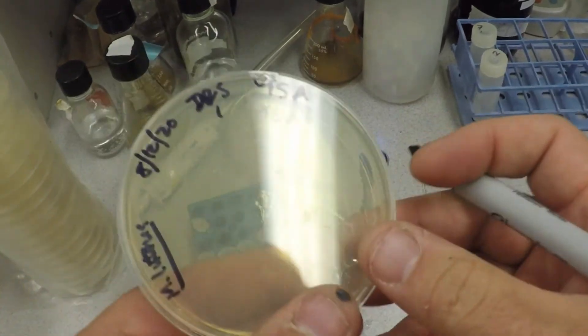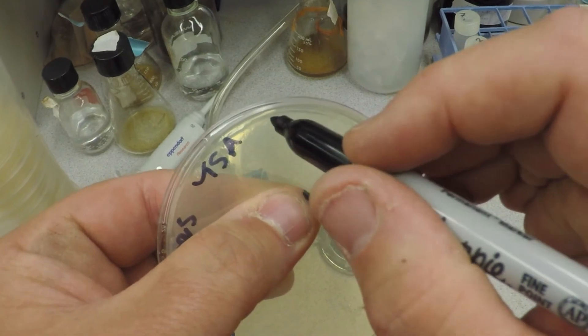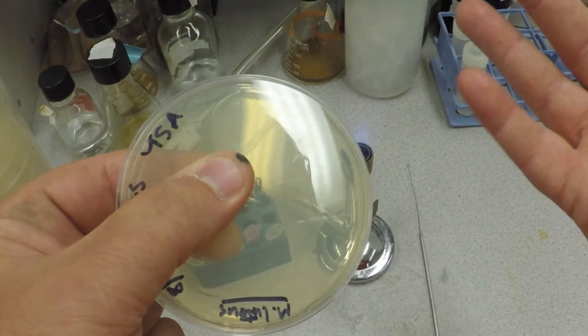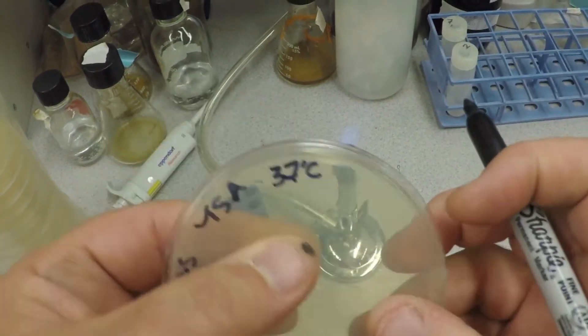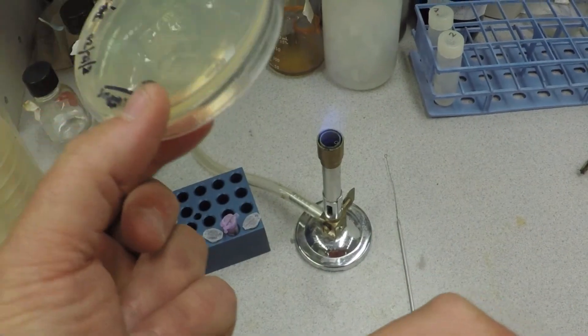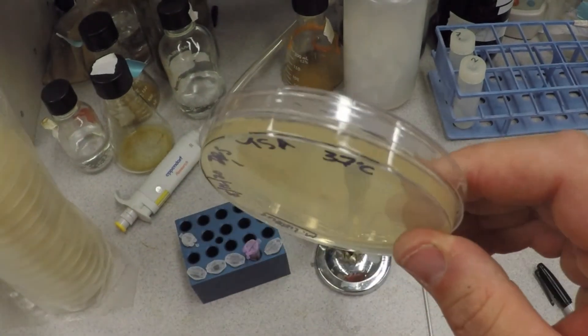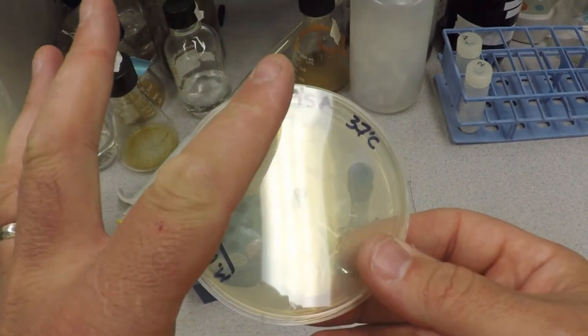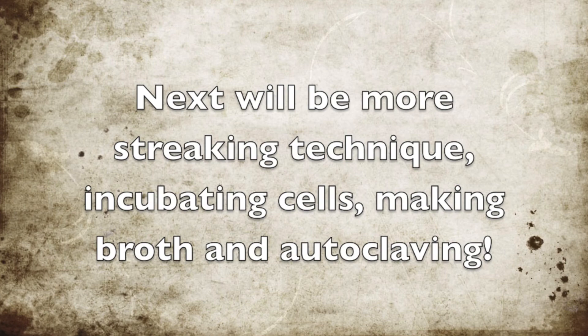We're going to incubate all of these at 37 degrees. Notice I'm also writing on the bottom, not writing on the lid. That's because what happens is these will fall, you'll lose the lids, and if all your information is on the lid, you'll never know what's going on. So always label on the bottom.